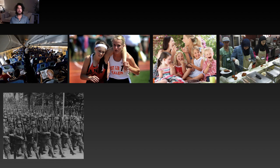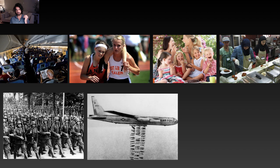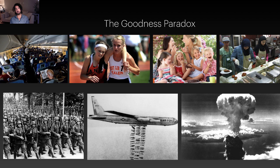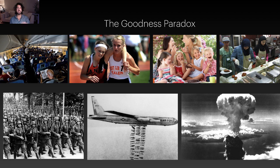But we're also the species of incredible violence. This juxtaposition between the peaceful, cooperative, moral species and the incredibly aggressive, violent species is what anthropologist Richard Wrangham calls the goodness paradox. How is it that we can be both — an incredibly nonviolent species compared to our cousins, and an incredibly violent species at the same time?